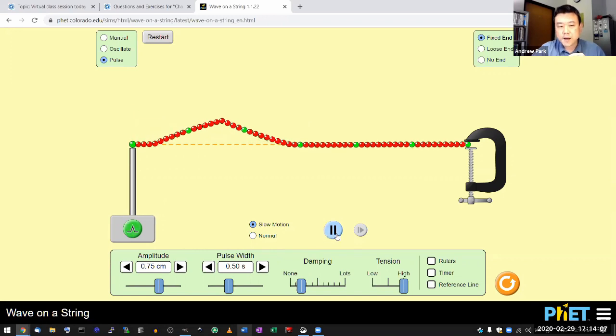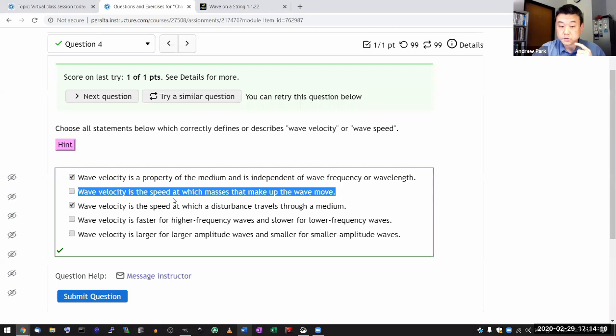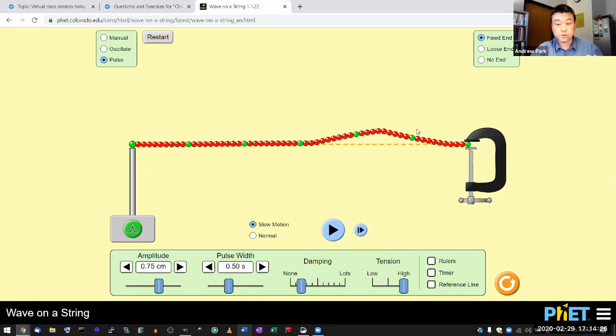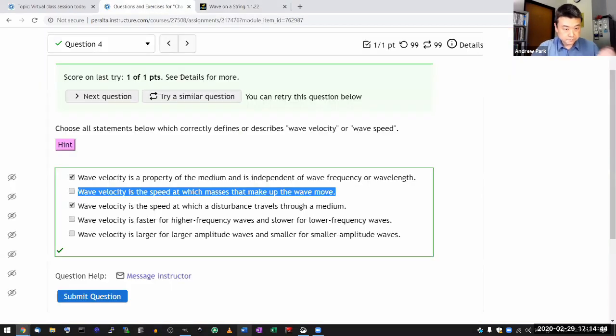So let me just do a slow motion so that I have more time to talk. So when the question talks about the masses that make up the wave move, you can actually see it here. There are these beads that make up the wave, and you can see that these beads are moving up and down. So there's that speed at which these beads move up and down. And that's not what we refer to as wave motion. That's regular motion. And wave motion is really the motion of the shape. It's a triangular shape that's moving across. That's what we are calling wave motion.